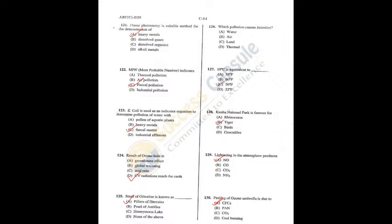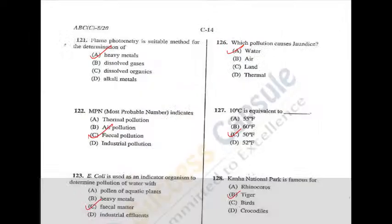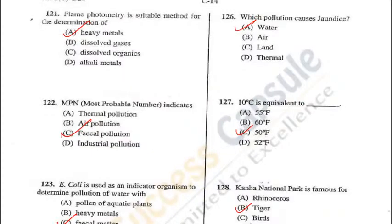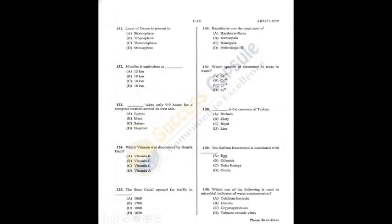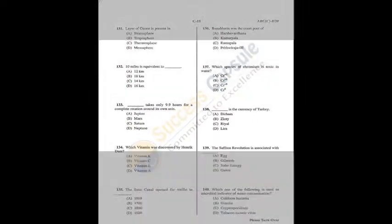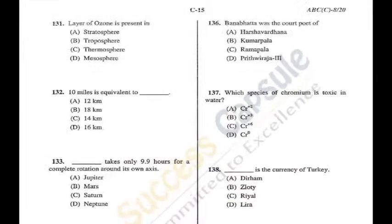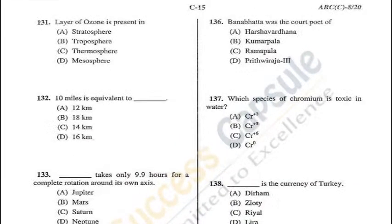Q127 = C, Q126 = A. Question 131: The ozone layer is present in the stratosphere — A is the correct answer.